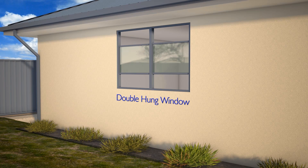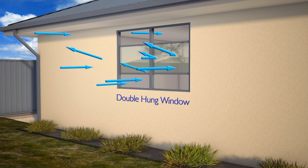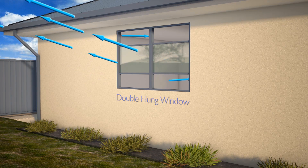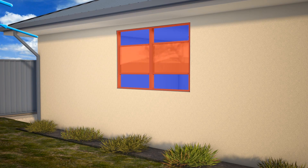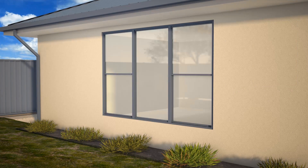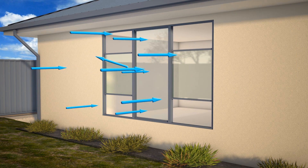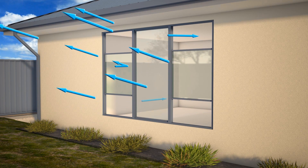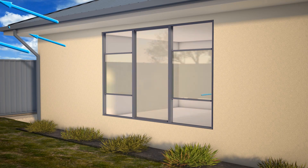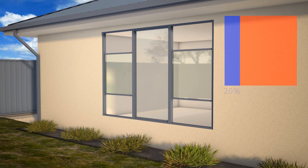Even when fully open, the sashes of double hung windows block half of the window area from allowing ventilation. Increasing the size of double hung windows introduces fixed panes, which further reduces their ventilation benefits.